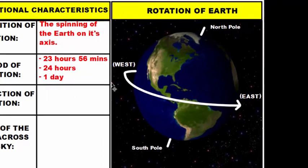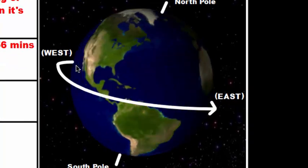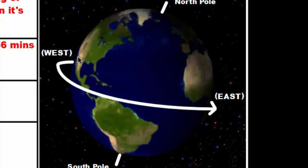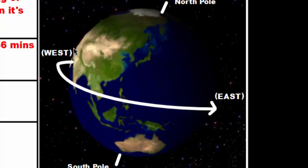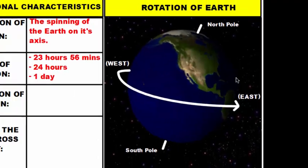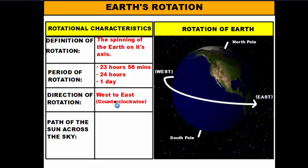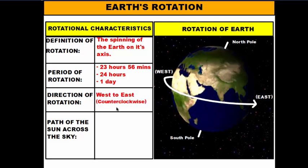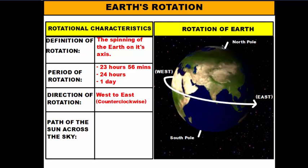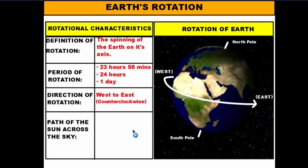Looking at this animation, you'll notice that the Earth spins in a particular direction — the land masses move from west to east, so the direction of rotation is from west to east. Viewed from above the North Pole, that means the Earth rotates in a counter-clockwise direction.